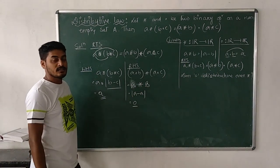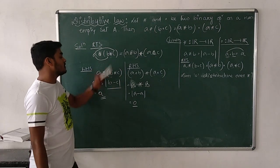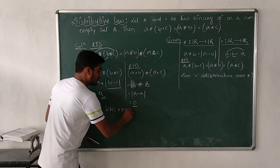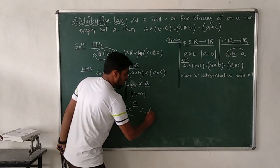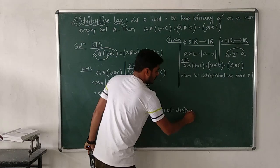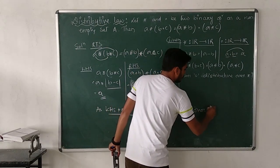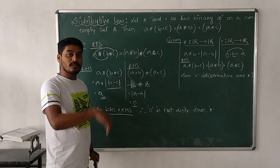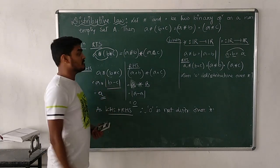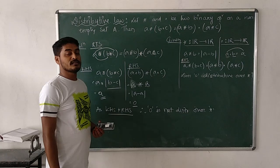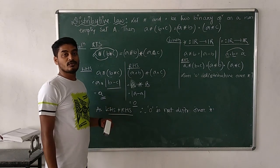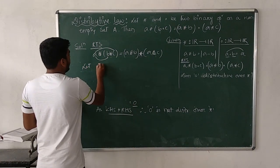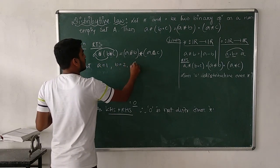Since left-hand side is not equal to right-hand side, we conclude that dot is not distributive over star. To justify, we give a counterexample. Let a = 1, b = 2, and c = 3.